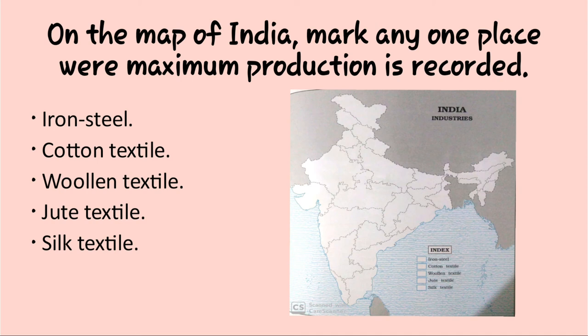For silk textile industry, Ludhiana, Amritsar, and Srinagar are maximum silk textile producers. Then Bangalore, Karnataka, and Salem are the maximum leading producers. Madurai and Coimbatore are also leading places in the silk industry.